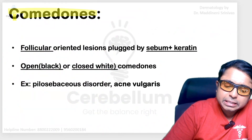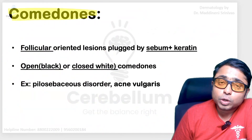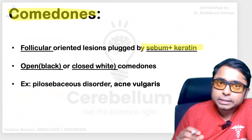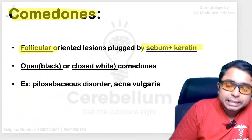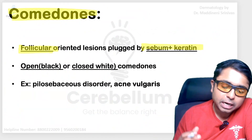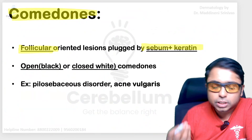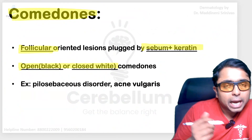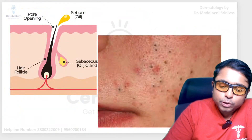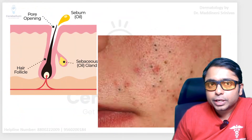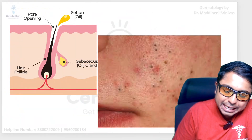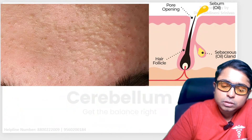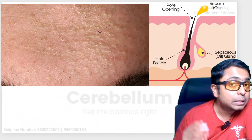Next, comedones — as discussed in the acne vulgaris topic — are a special lesion formed due to the plugging of keratin and sebum at the follicular level. Acne vulgaris is a pilosebaceous unit disorder. There are two types of comedones: open comedones, also called blackheads which are black in color, and closed comedones, also called whiteheads.